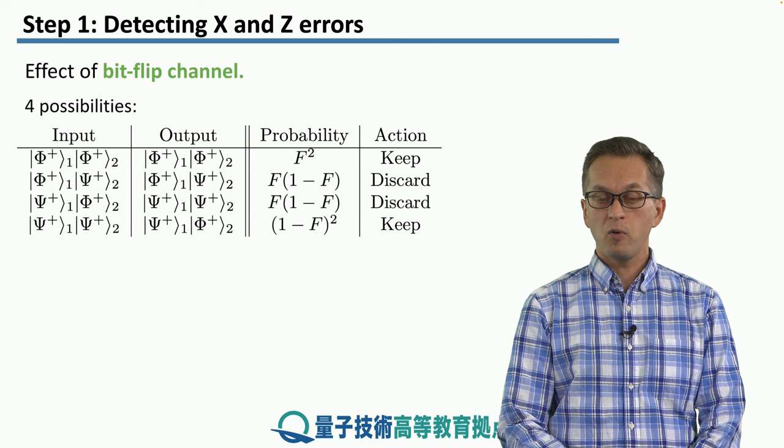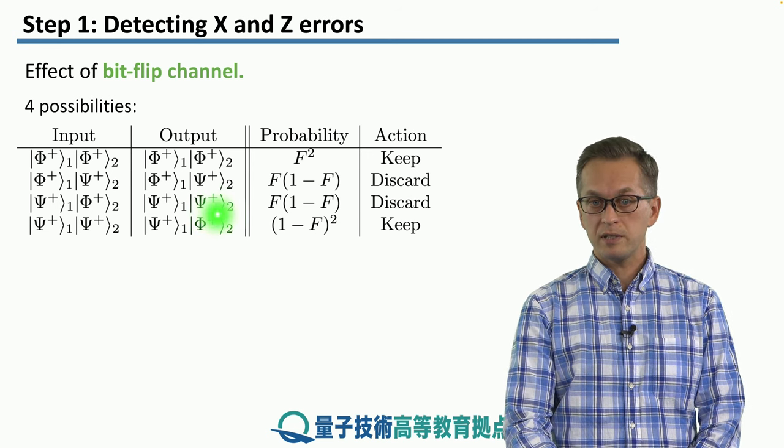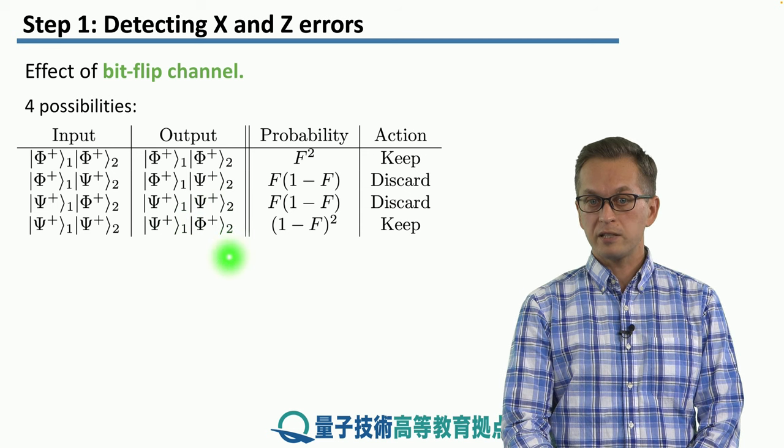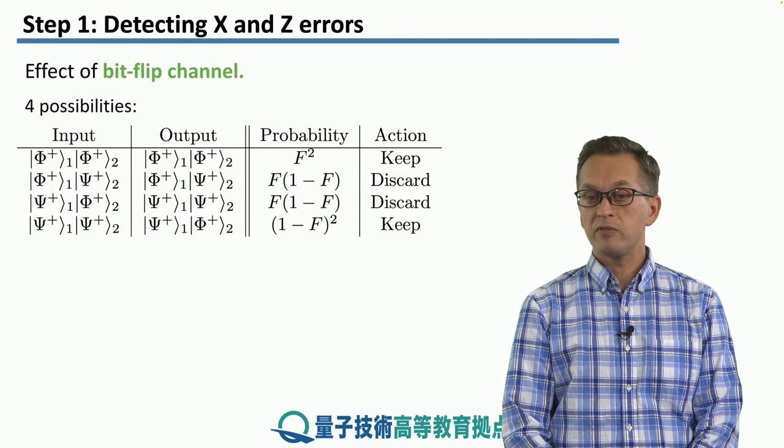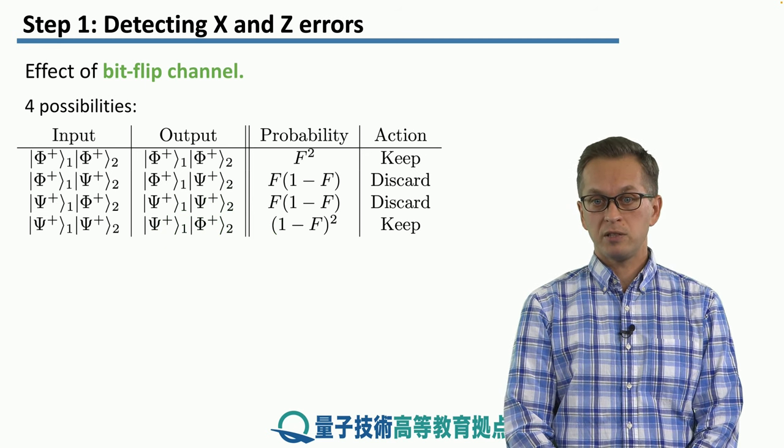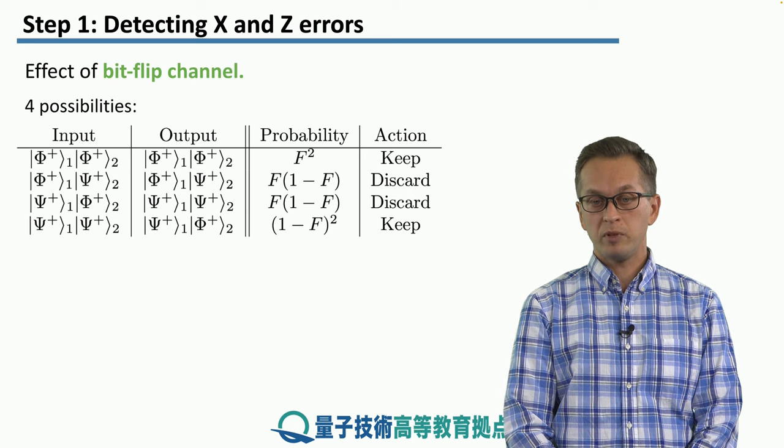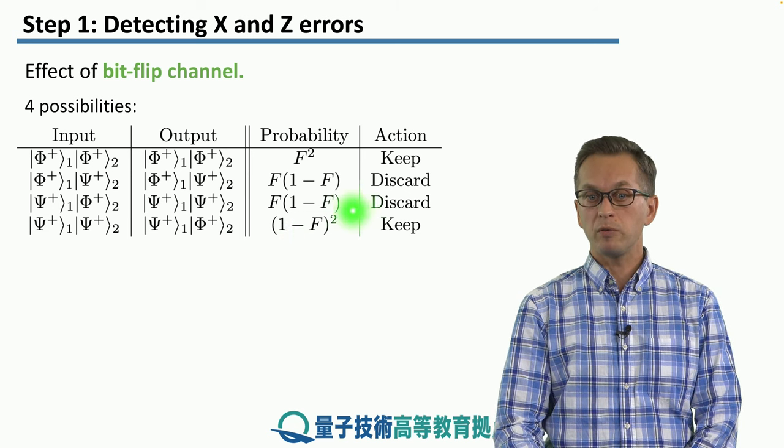Final possibility is that both states are affected by the noise. But this time, notice that the second pair has changed after the application of CNOT gates into a phi plus state, meaning that it will pass the parity check and we will keep the first pair. This happens with probability 1 minus F, the whole thing squared.